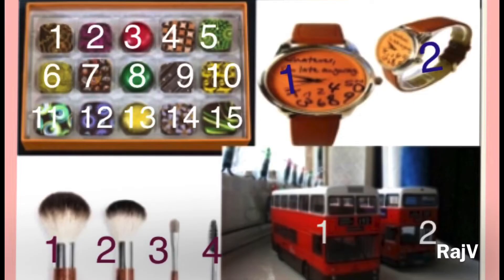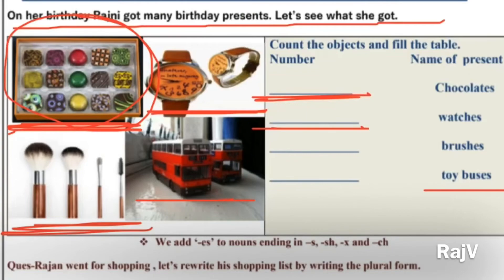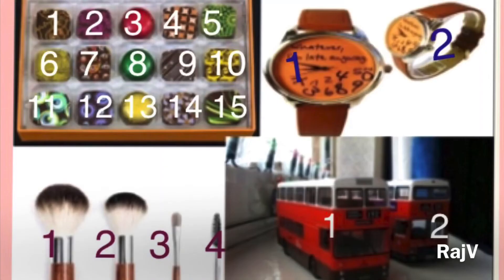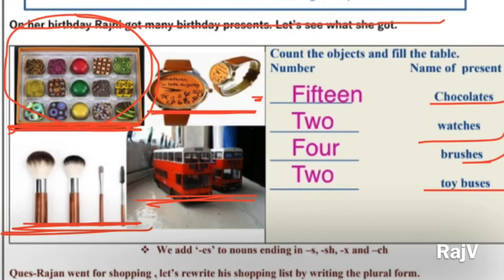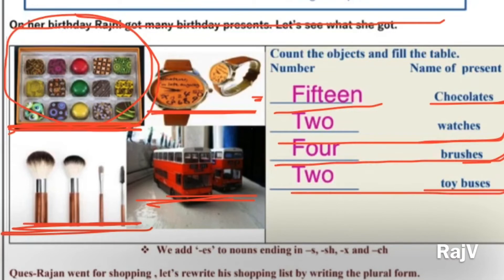Then we have watches — kitni watches hain? One and two watches. Aap yahan likhenge. Then we have brushes — one, two, three, four brushes. Then we have buses — we have two. Number name likhne hain, koi bhi bachcha match waale numbers nahi likhega. So: fifteen chocolates, two watches, four brushes, and two buses.